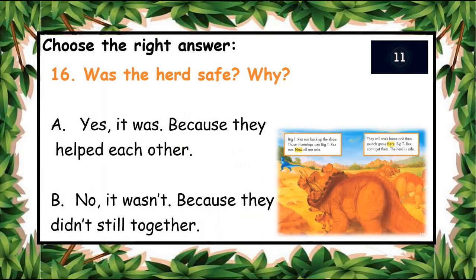The last question: was the herd safe and why? A: Yes, it was — because they helped each other. B: No, it wasn't — because they didn't stay together. What do you think? You have ten seconds to answer. A: Yes, it was because they helped each other. Let's see — yes, A is the right answer!